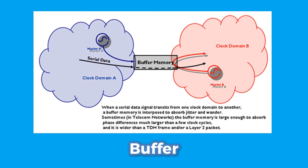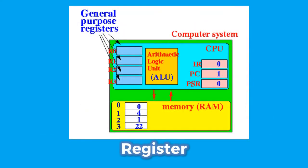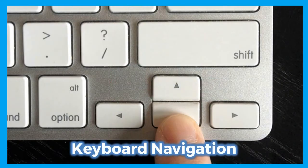Moving on to buffers. They are temporary storage in a computer's memory where data is stored when it is being moved. They are also registers that hold instructions and they are part of the CPU.